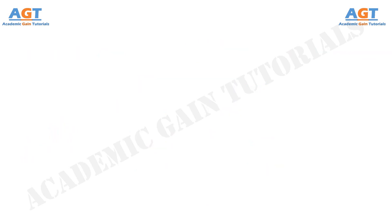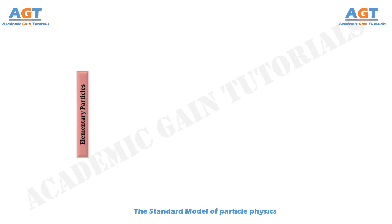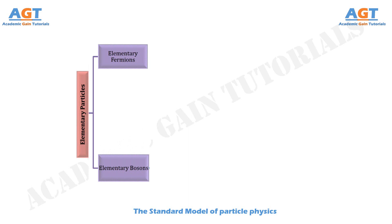The standard model of particle physics shows the proper classification of the elementary particles. Here, the elementary particles are divided into two classes: the elementary fermions and the elementary bosons. The elementary fermions are again classified into quarks and leptons, and the anti-particles called anti-quarks and anti-leptons.